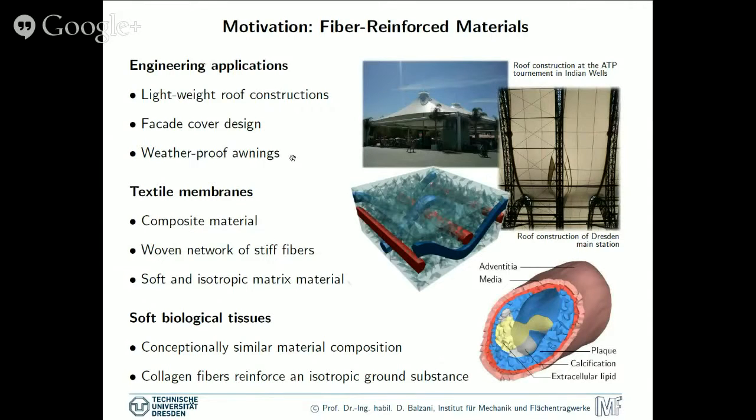The main composition of the material is, as exemplarily shown here, that we have a rather isotropic, soft matrix material and embedded therein we have a woven fiber network of rather stiff fibers. Those are the ones that are shown here. And they are rather wavy like. In soft biological tissues, we have a conceptually similar material composition, where we also have an isotropic ground substance and embedded fibers here with respect to the passive response, typically the collagen fibers that are arranged crosswise helically around this arterial wall.